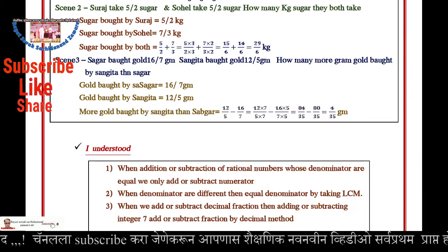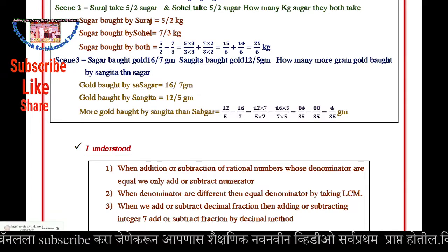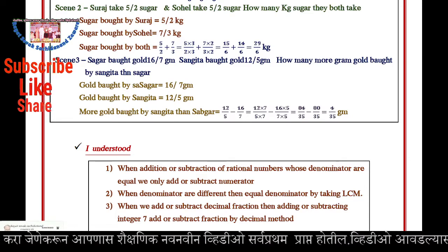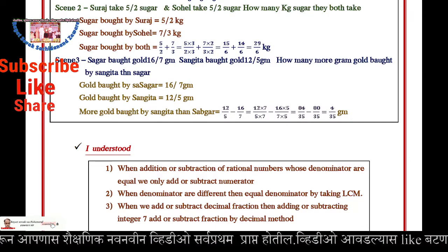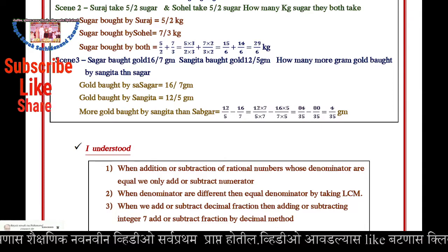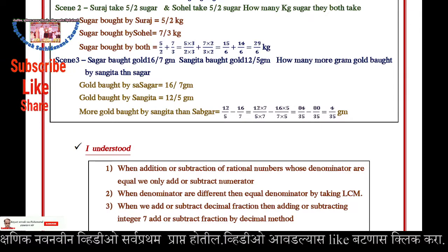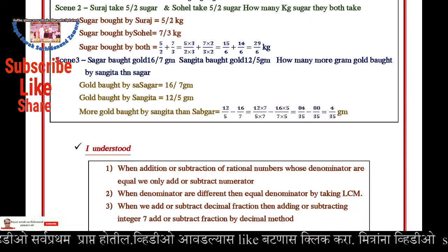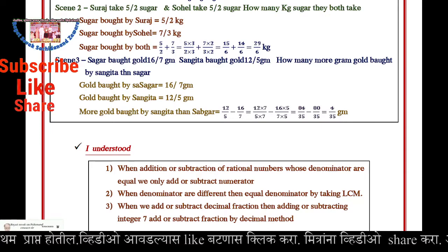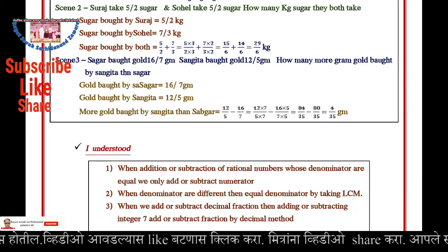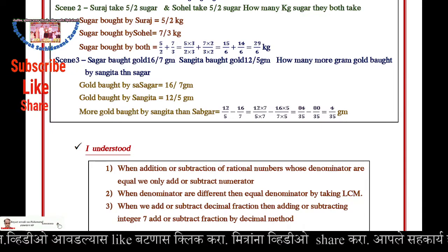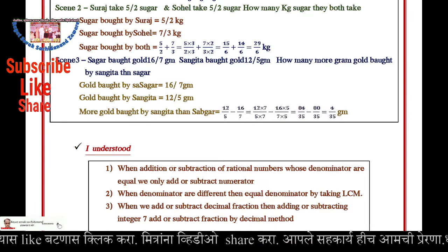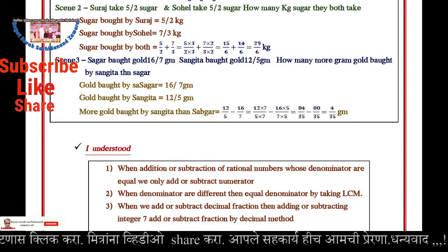So we get (12×7)/(5×7) minus (16×5)/(7×5). 12×7 is 84, 5×7 is 35, 16×5 is 80, 7×5 is 35. So 84 minus 80 equals 4, denominator 35. Answer: 4/35 grams.